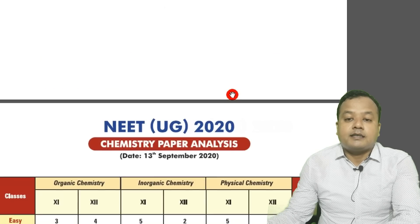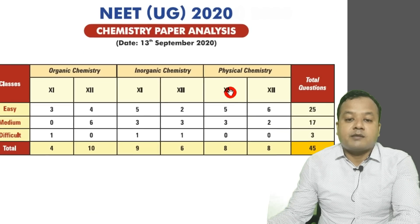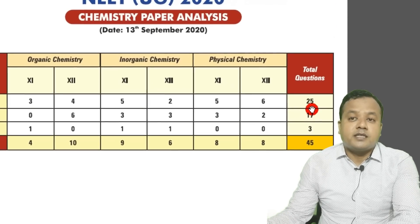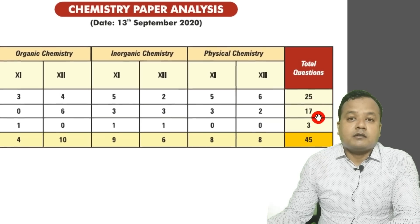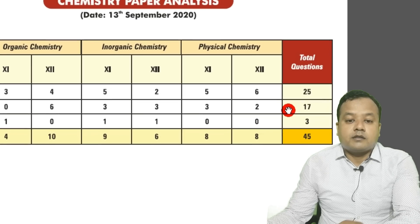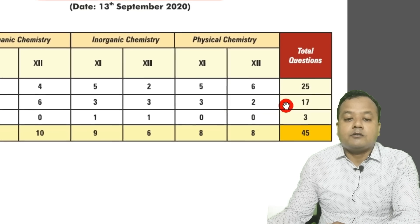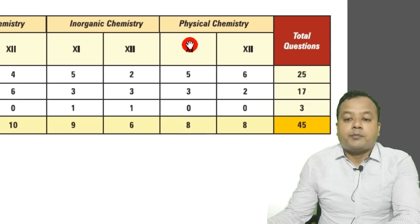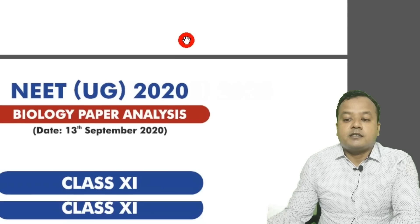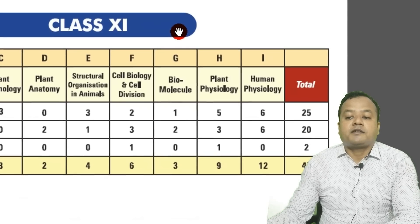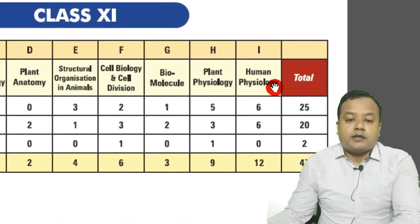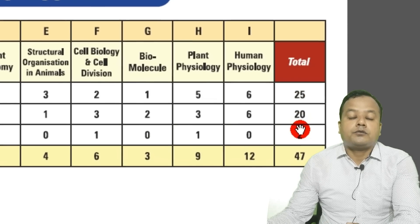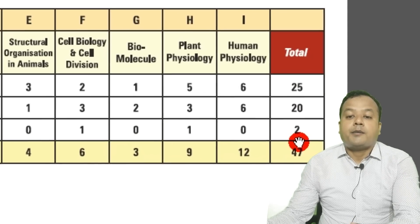Talking about Chemistry: there were 25 questions of easy level, 17 questions of medium level, and 3 questions of difficult level — total 45 questions. Talking about Biology: there were 25 questions of easy level, 20 questions of medium level, and only 2 questions of difficult level.